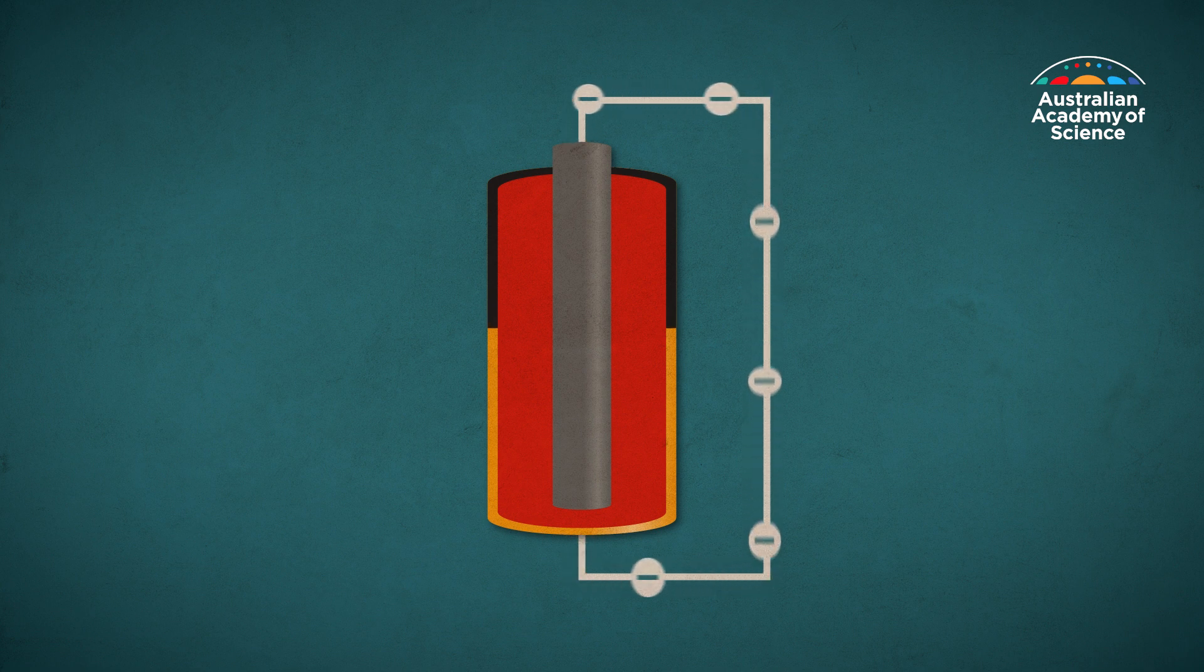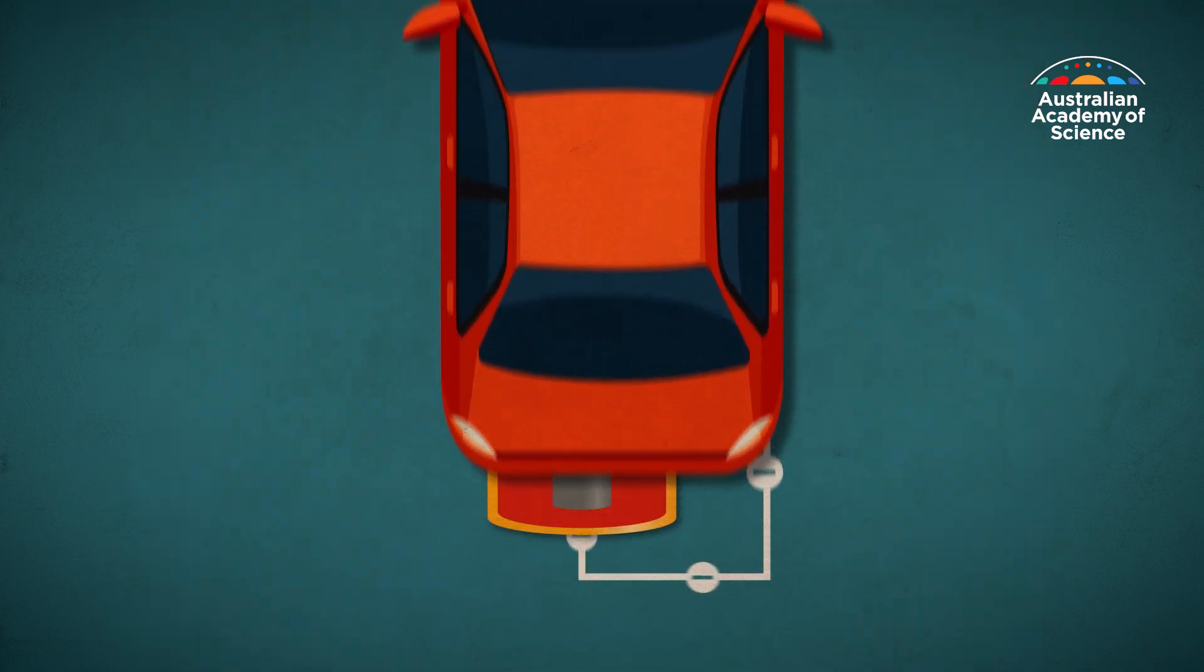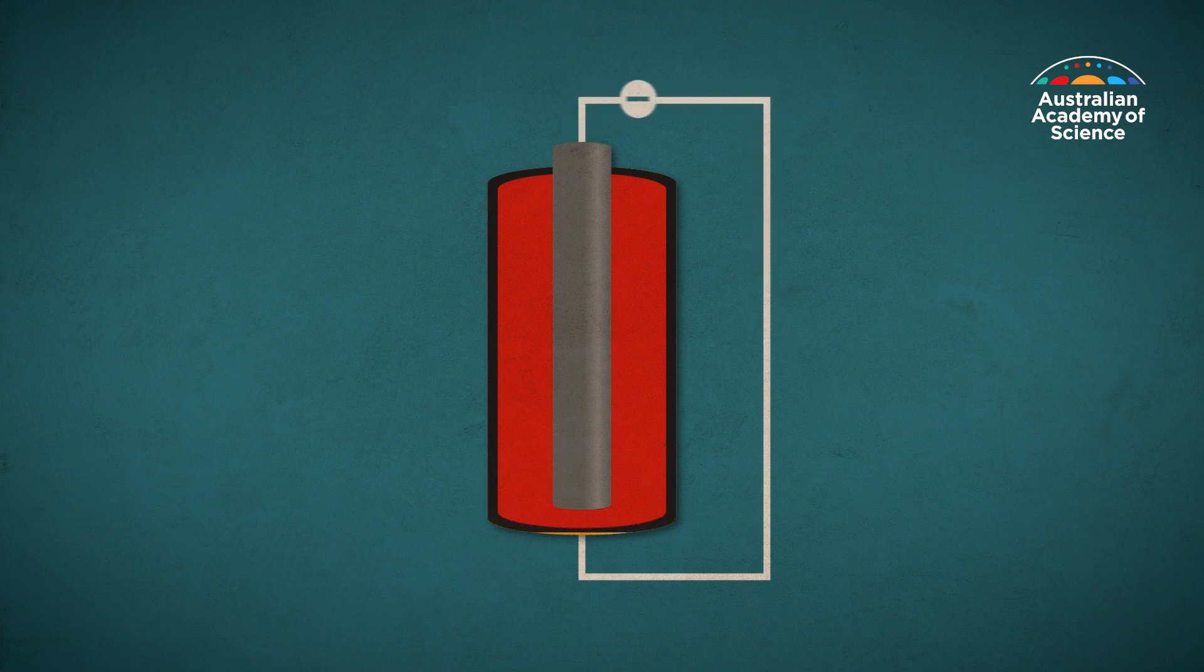This oxidation-reduction cycle produces a flow of electrons and if you connect your phone, a light bulb or a car, you'll give it power. But once your anode completely oxidizes, the battery is flat.